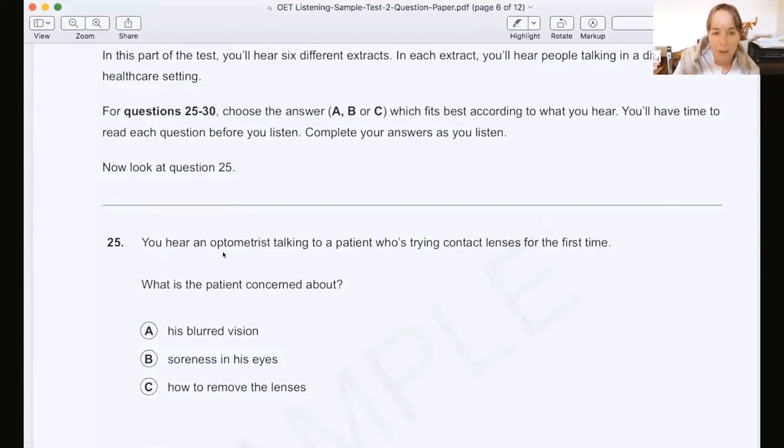OK, so you can start thinking about what sorts of things do optometrists talk to patients about in terms of contact lenses. Then you can look down at the question. What is the patient concerned about? His blurred vision, soreness in his eyes, and how to remove the lenses. So what you should be doing is thinking about keywords and trying to predict synonyms that might come up. You're going to be listening for synonyms because obviously the information that comes on the recording is not going to be exactly the same as that in the question. Sometimes it will be, but generally not because they want to check your comprehension skills, your ability to listen for synonyms and for important information.